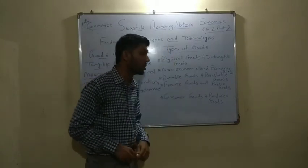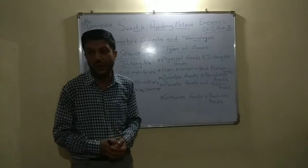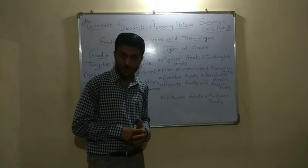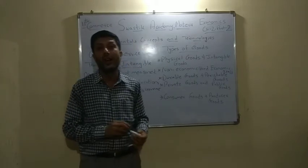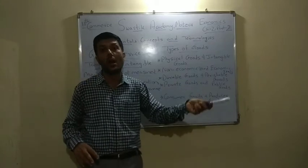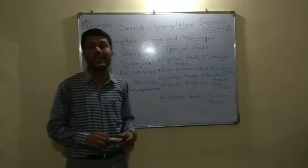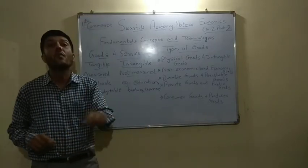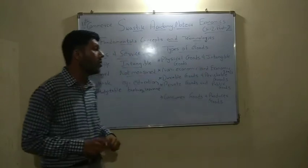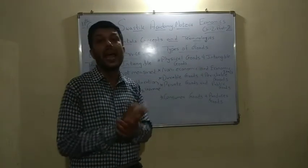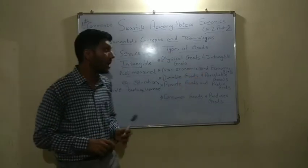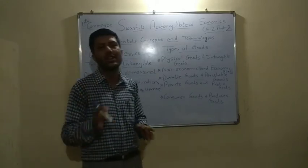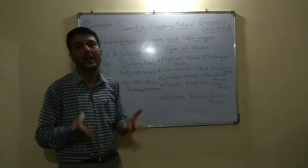Uske baad hai aapke types of goods. Physical goods yani bulb, TV, fridge — yeh sab physical goods mein aate hain. Intangible mein electricity — woh ek service hai. Phir aapka jo transportation ek service hai, par tempo ek physical good hai. Phir aapka AC jo hai woh physical good hai, uske hawa jo aati hai aur electricity consume hoti hai — woh service hai. Non-economic yani jisme paise nahi dene padte hain: air, sunlight — aur woh abundantly available hain. Economic goods yani jisme paise dene padte hain — bahut lamba list hai: TV, fridge, jewelry, car, AC — sab kuch hai.